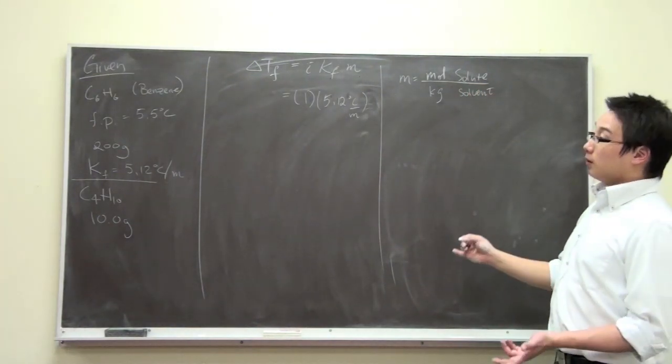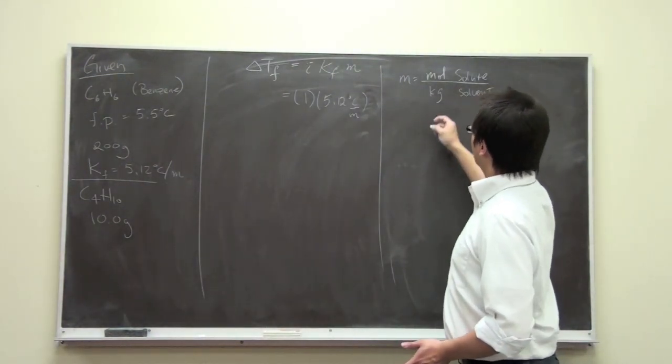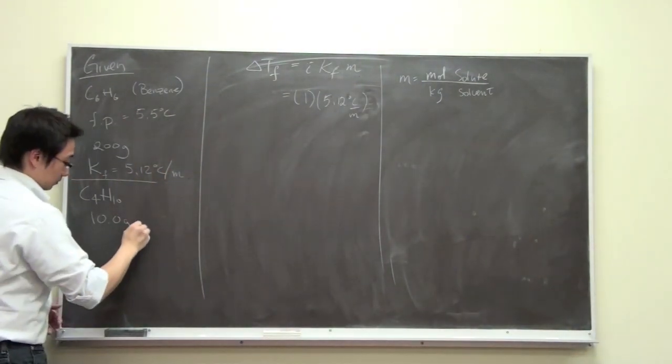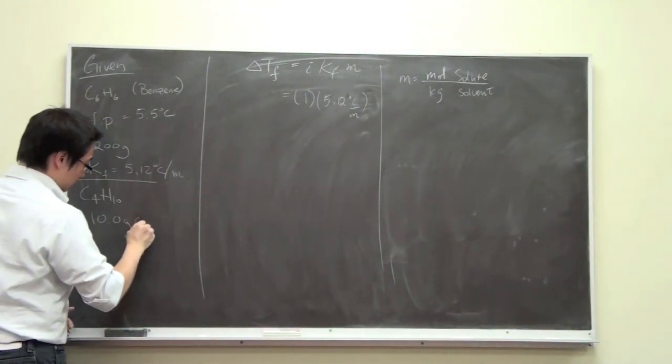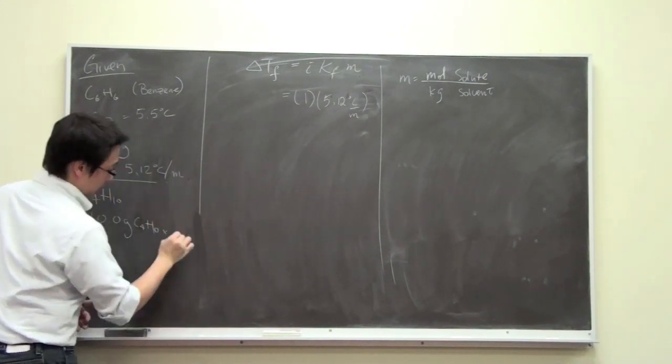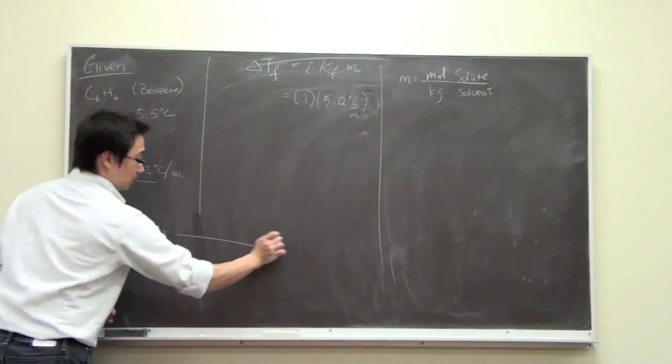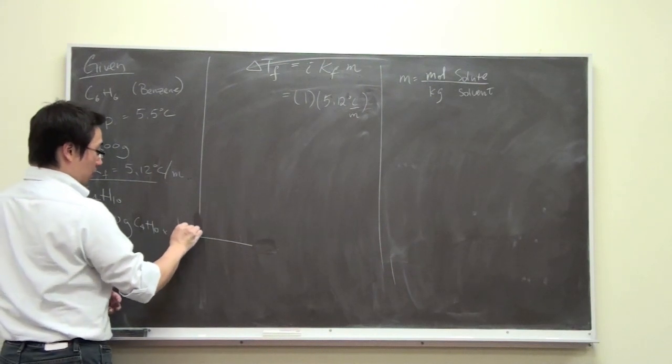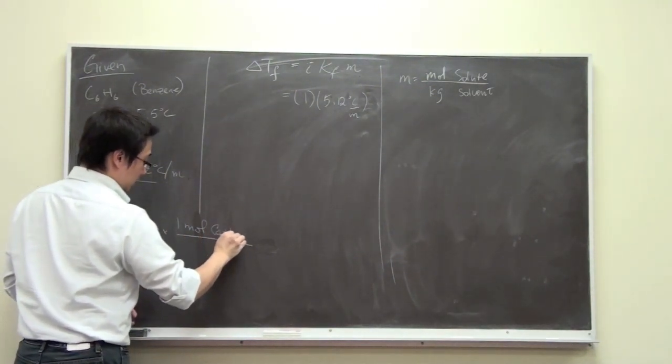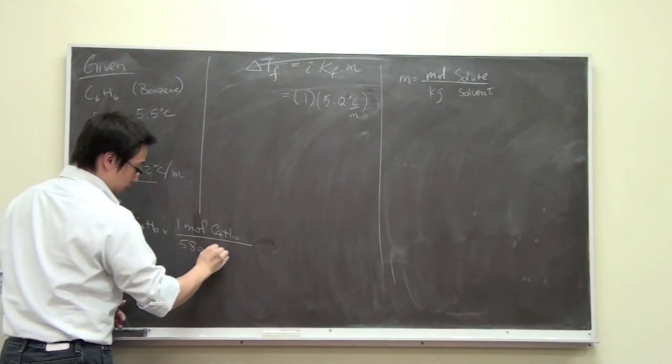Do we have the moles of solute? We have the mass but not the moles. So we can find out the moles of solute by finding out the molar mass, and we can find out the moles. We have one mole of butane, C4H10, and that will give you 58 grams of butane.